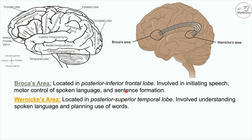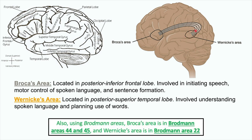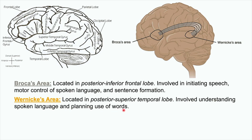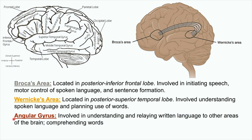Moving on to Wernicke's area. Wernicke's area is located in the posterior superior temporal lobe. It's a more posterior aspect of the temporal lobe and it's going to be superior. Wernicke's area is involved in understanding spoken language and planning use of words — it's involved in comprehension. Another important part of the brain is the angular gyrus, which is located adjacent to Wernicke's area and is involved in understanding and relaying written language to other areas of the brain, and comprehending words.